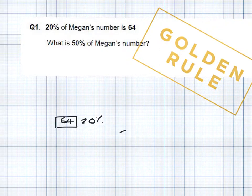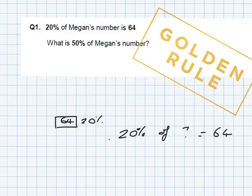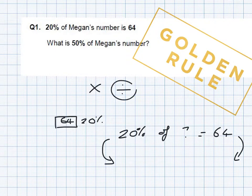So if we know 20% of the number is 64, well 20% of our number is 64. We need to find 10%. So how do I get from 20% to 10%? Now I'm going to use times and divide today to do this because when we're thinking about fractions and percentages we multiply and we divide to find equivalents and other fractions and other percentages.